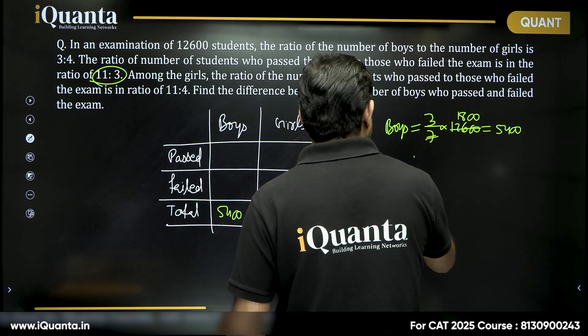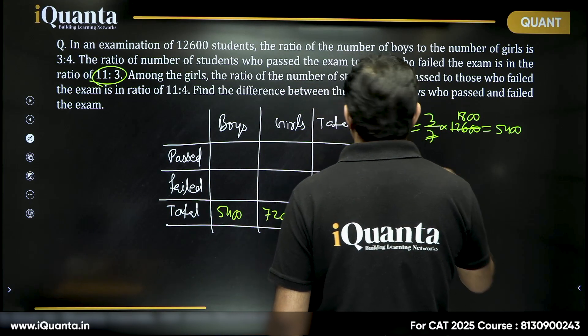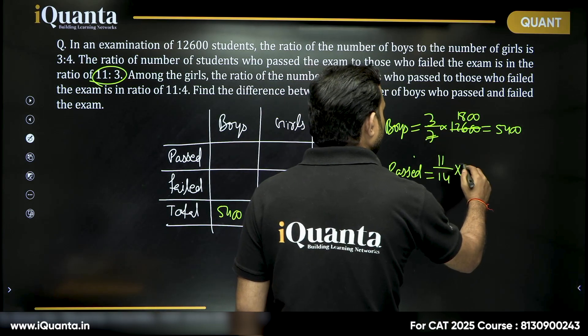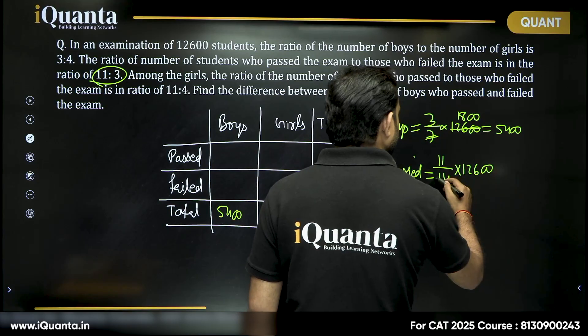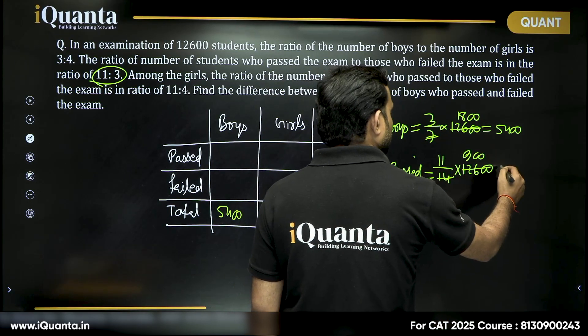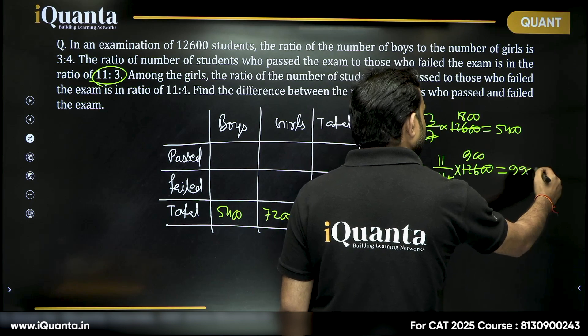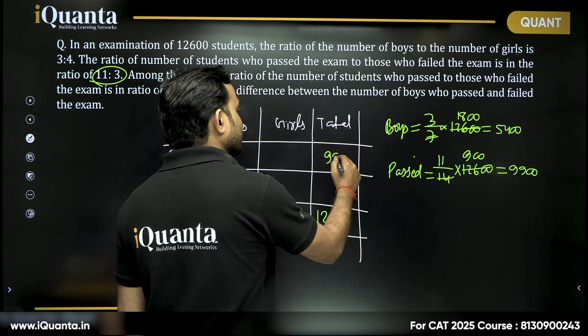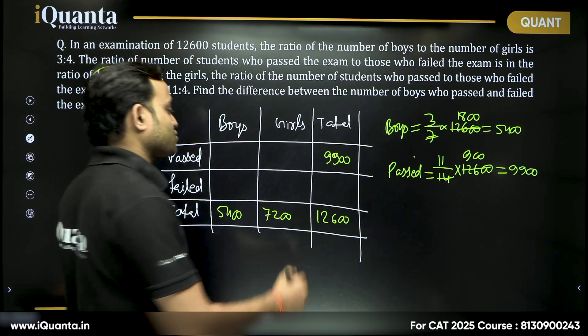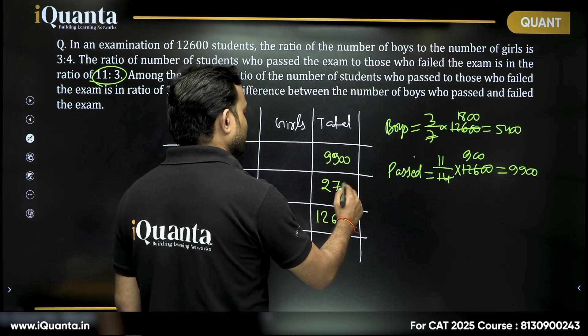So what we can say number of students passed will be equal to 11 out of 14 of 12,600, 14 into 9 is equal to 126. So 9,900 students passed this exam and the rest of them which is 2,700 failed this exam.